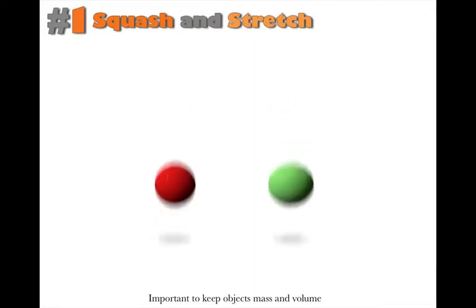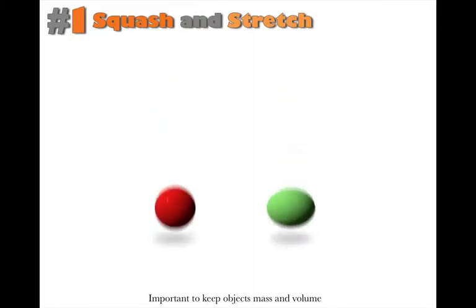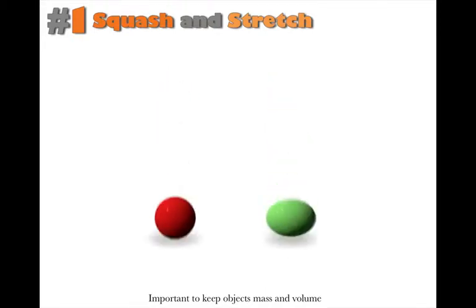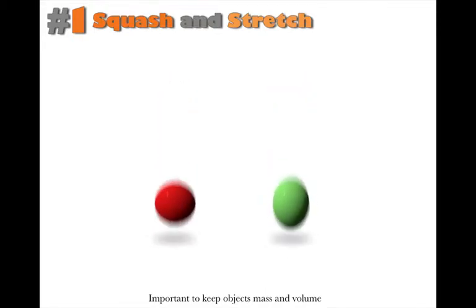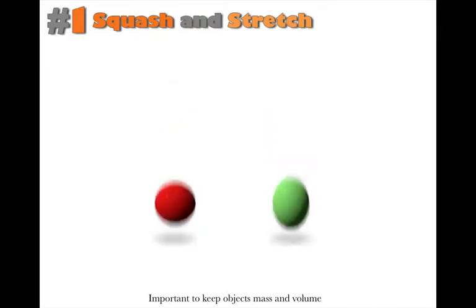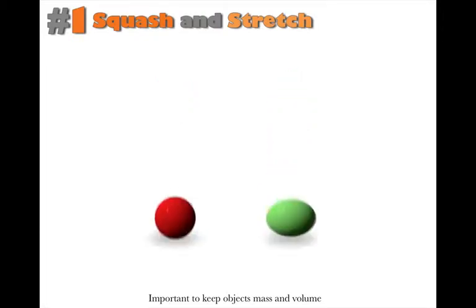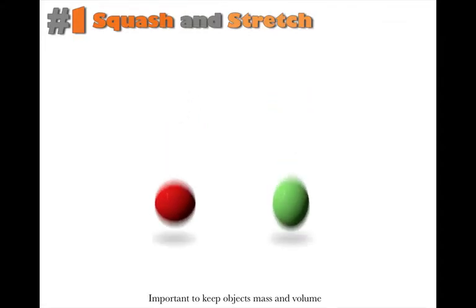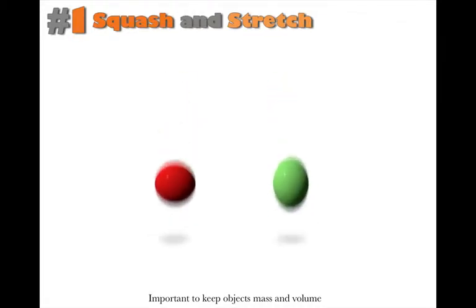One important factor to make squash and stretch look like an actual physical property is that the object must never lose its mass or volume. It should never shrink and never get bigger arbitrarily. If it goes out, it should go down. If it squashes in, it should stretch up.